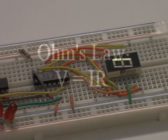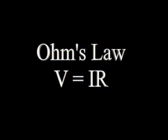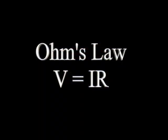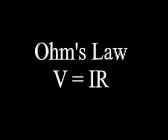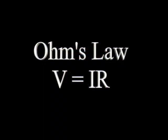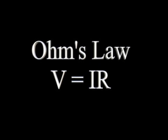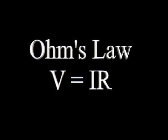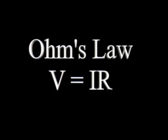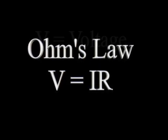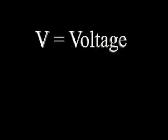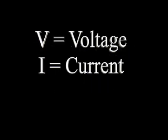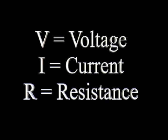Ohm's Law is commonly expressed as V equals I times R. This is a simple equation that shows how current, voltage, and resistance are related. V represents voltage, I represents current, and R represents resistance.